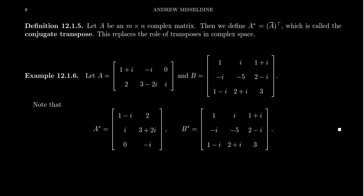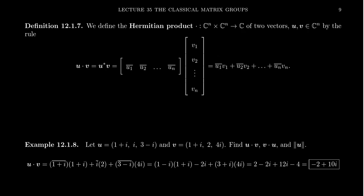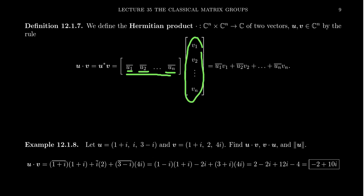We take the conjugate transpose whenever we have complex vectors or matrices. Using the conjugate transpose instead of the regular transpose, we define the Hermitian product — the inner product for complex vectors. When you see u·v for complex vectors, this means u*v: take the conjugate transpose of the first vector, turning it into a row vector with conjugates, then multiply by the original second vector. You get the sum of products of corresponding entries, always taking the conjugate of the first entry.